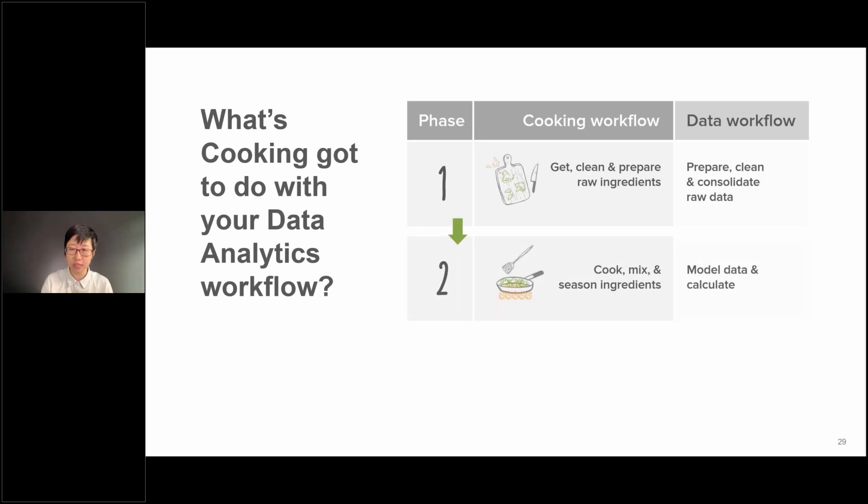In phase two, in a cooking scene, you'll mix all the ingredients together, apply some heat, be it through deep frying, stir frying, steaming, baking, barbecue. In the data world, you need to then model your data and do some calculations.